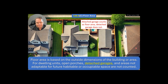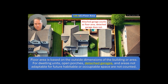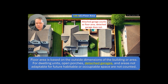Section 120.5C covers floor area. Floor area is based on the outside dimensions of the building or area. For dwelling units, open porches, detached garages, and areas not adaptable for future habitable or occupiable space are not counted. When you're doing the calculation for a dwelling, you look at the square footage of the dwelling only — the detached garage is not part of the dwelling. When sizing the dwelling unit and applying demand factors, the detached garage is excluded.